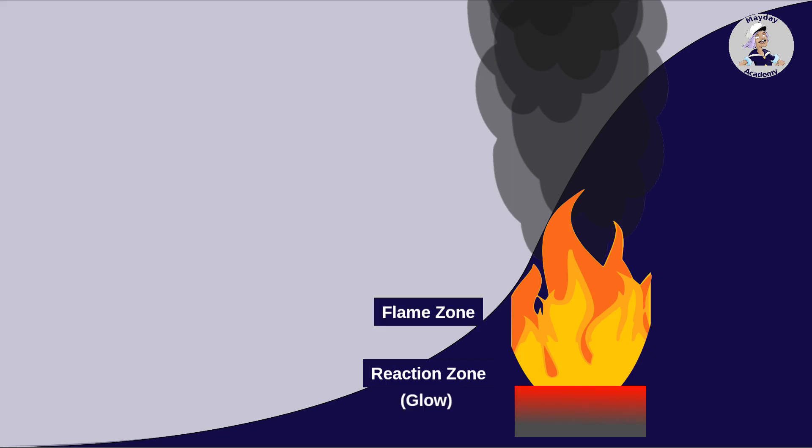The flame zone contains hot combustion gases and sometimes unburnt fuel. The heat leads to light emission, as mentioned above. Due to unburnt fuels, oxidation reactions can still occur here.